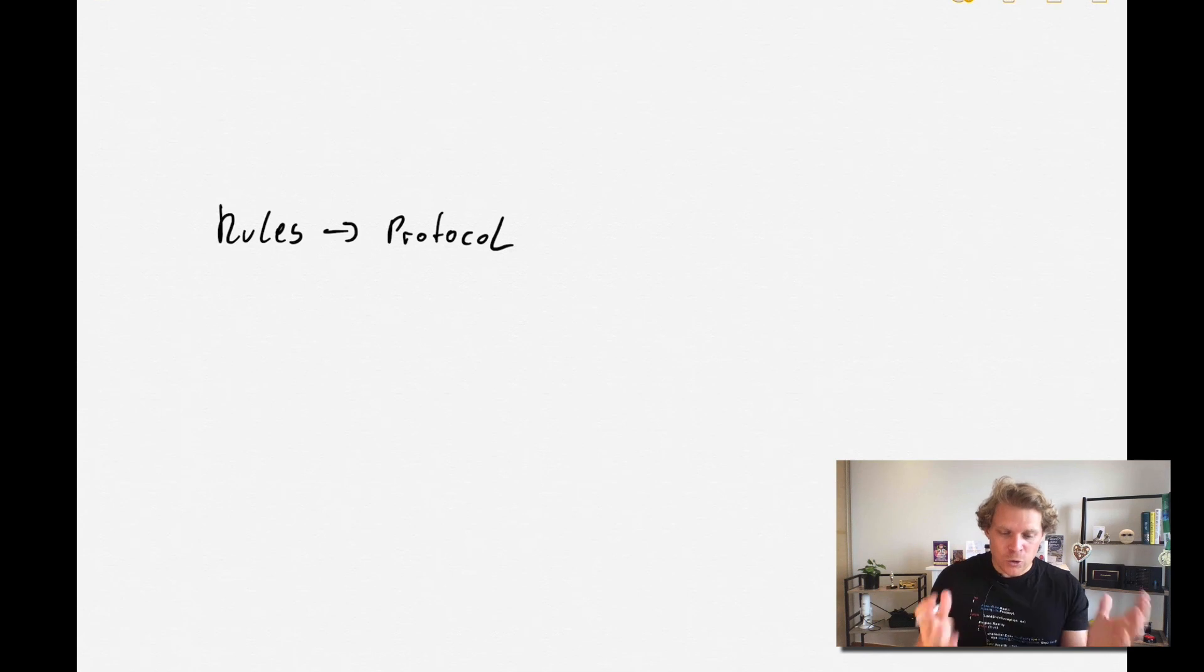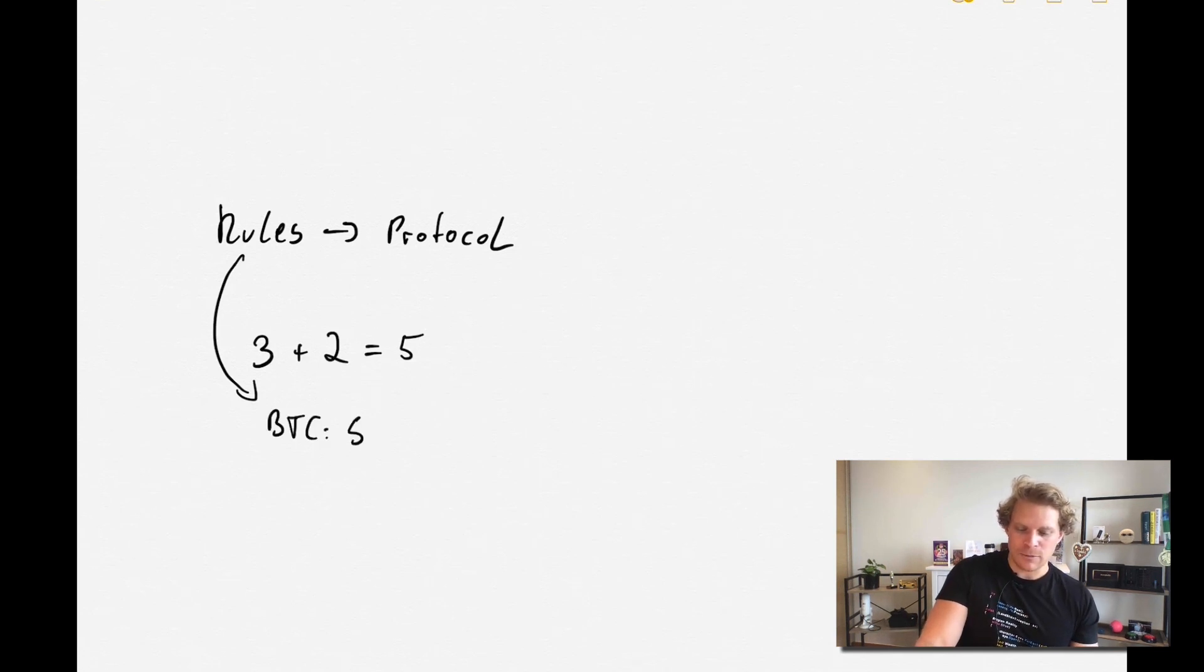So for example, one of those rules could be if I add 3 plus 2, that this equals 5, right? So this would be one. And so I would have all these different rules, and all these rules together get compounded in the very basic programming language in Bitcoin. This is, for example, Script.